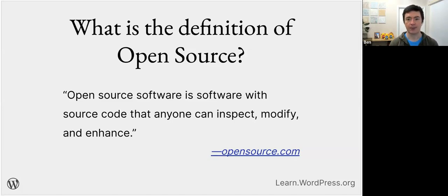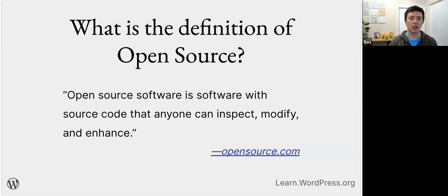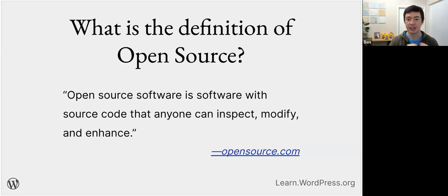The opposite of open source is proprietary software. When you purchase software from companies, it used to come on CD-ROMs or floppy disks. This software would be compiled into a format that can only be read by a machine — a human could not look at the code and make changes because it was already compiled and encrypted. That's how companies protected their software — they would compile it and sell it.